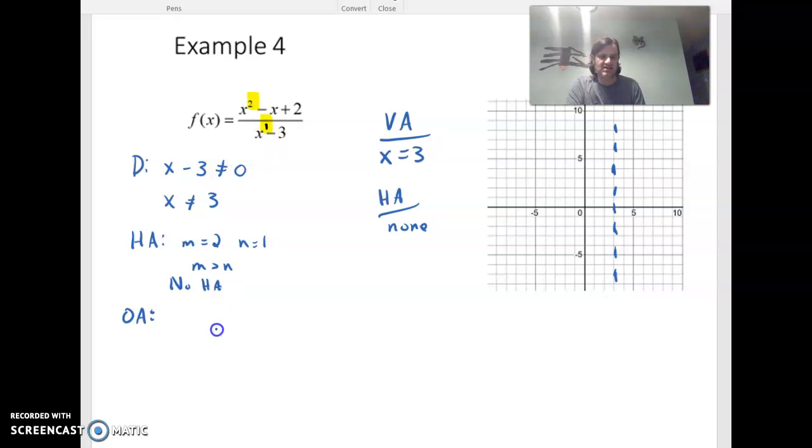So we're going to do polynomial division. We're going to say x minus 3 divided into x squared minus x plus 2.